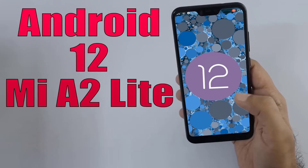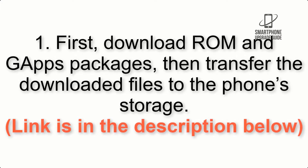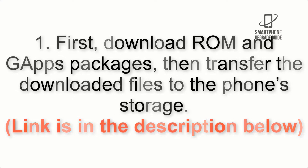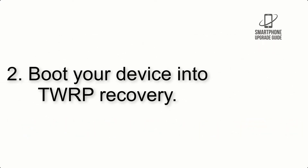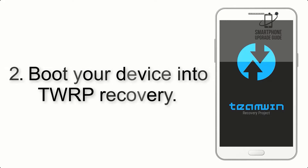Install Android 12 on Mi A2 Lite via Lineage OS 19.1. Please check the description for important notes and all the download links. First, download the ROM and GApps packages, then transfer the downloaded files to the phone storage. The link is in the description below.